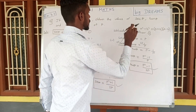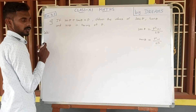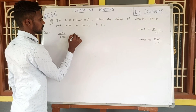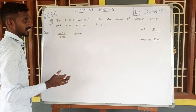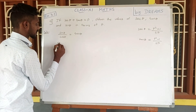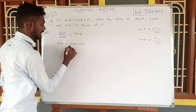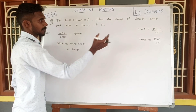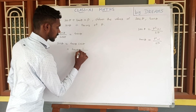Now we will find the value of sin theta. We already have secant theta and tan theta. We will use the formula: sin theta divided by cos theta is equal to tan theta. So sin theta equals tan theta multiplied by cos theta. Since cos theta is the reciprocal of secant theta, cos theta equals 1 by secant theta.